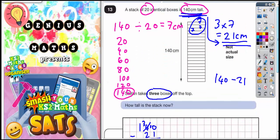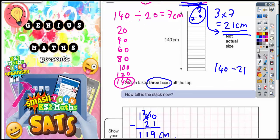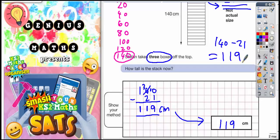So just to recap, there's 20 boxes and each one must be 7 because 20 lots of 7 is 140. And if you take 3 lots of 7 off, which is 21, 140, take away 21 gives you your final answer, which is 119cm. That's how tall the stack is now.